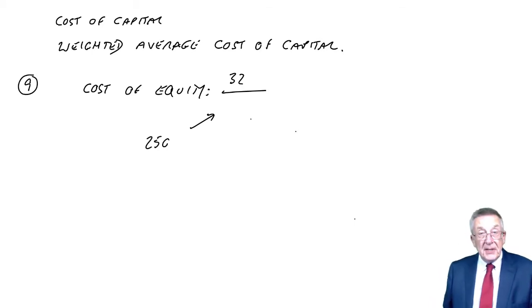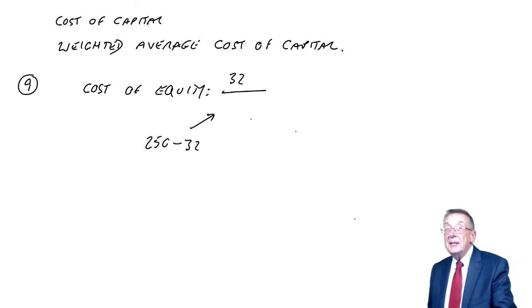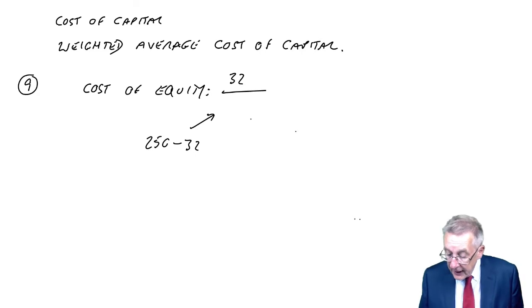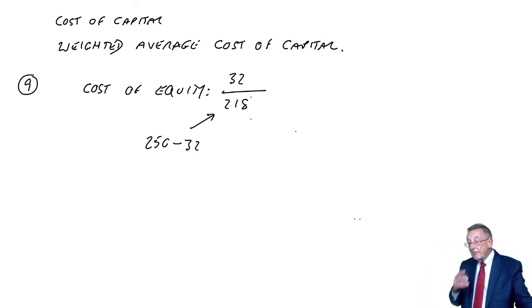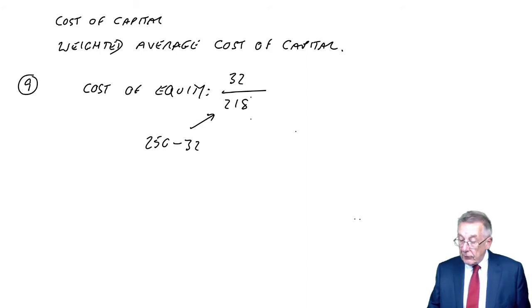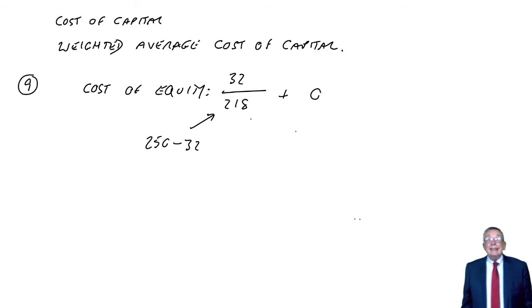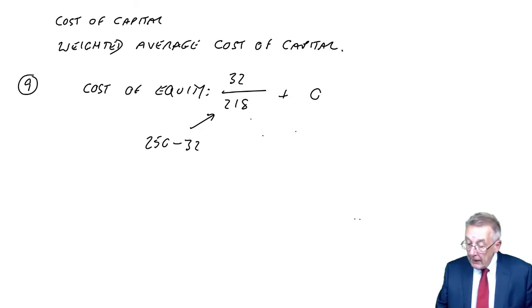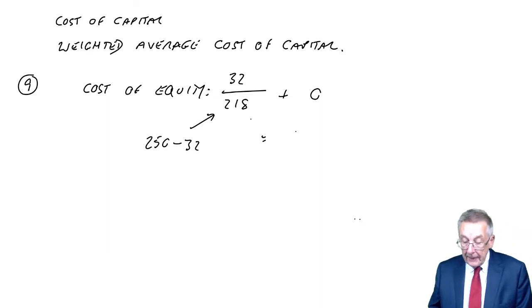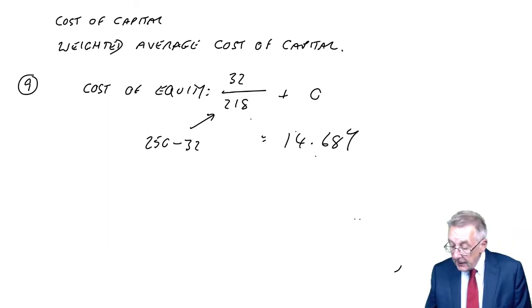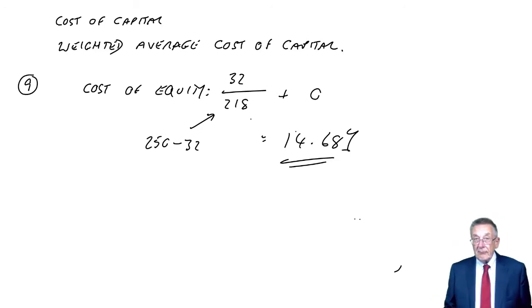So 32 over the ex-div market value. Well, the market value, if I work in cents, currently is 250, but it's cum div. I explained before to go ex-div, subtract the dividend about to be paid, of 32, which leaves us with an ex-div value of 218, plus g, the rate of growth, but again, g is 0, because it's constant dividend. So the cost of equity, 32 over 218, 14.68%. And remember, for cost of equity, tax is irrelevant.